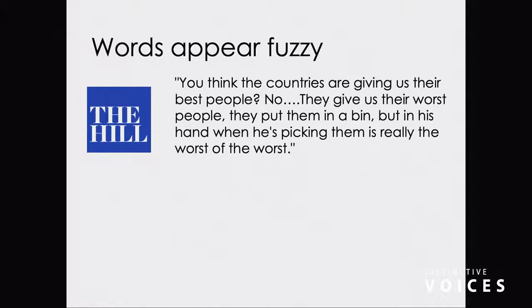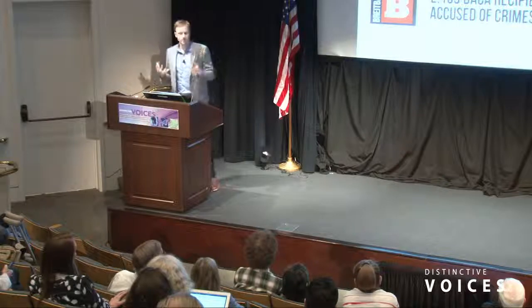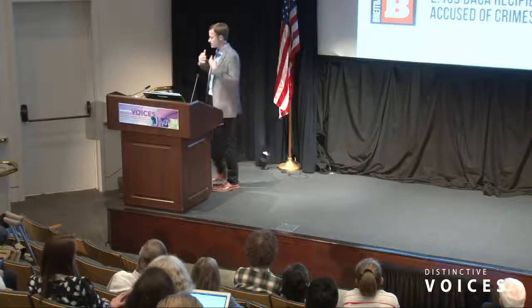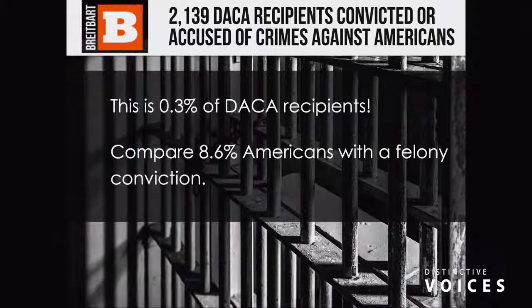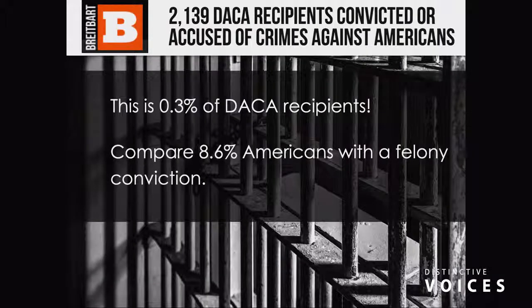To give an example in the real world: if I took the same story — this is from The Hill — 'you think the countries are giving us their best people, no, they give us their worst people.' You get a sense of what it's implying. But it's not until numbers are thrown in on the same exact story that you get '2,139 DACA recipients convicted or accused of crimes against Americans.' The 2,139 — it feels big, it feels scary. But what should we always do with numbers? Numbers need to be presented in context the same ways that ideas and arguments need to be put into context. It turns out that's 0.3% of DACA recipients — yes it is 2,139.